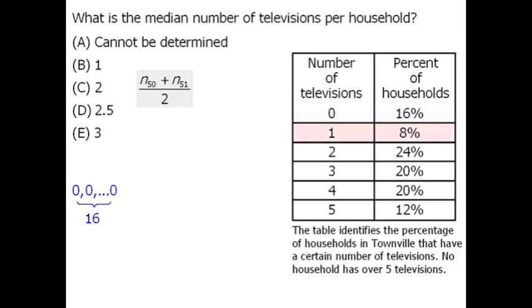Next, we're told that 8% of the households have one television. So that means 8 households have one television. So we'll list eight ones.